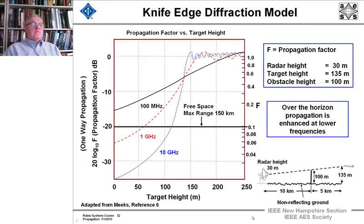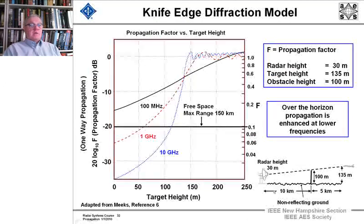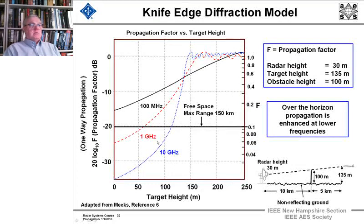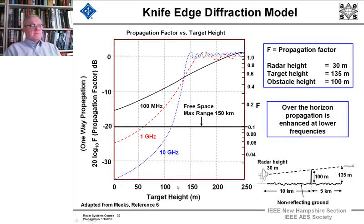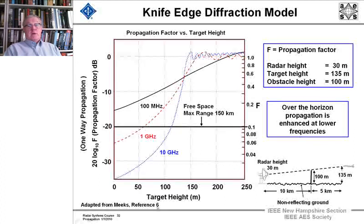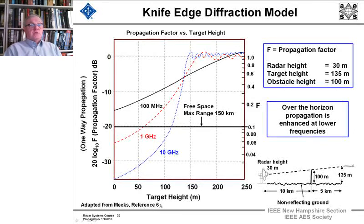Now I'm going to move on to an example of a knife-edge diffraction to show you just in a rough quantitative sense, for one specific example, the effect that frequency has to play. This is adapted from a book, Radar Propagation, by Meeks, and it's reference number six. It's in the list of references for this lecture. So here's what the example is.